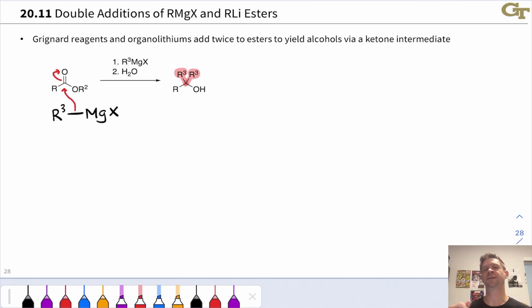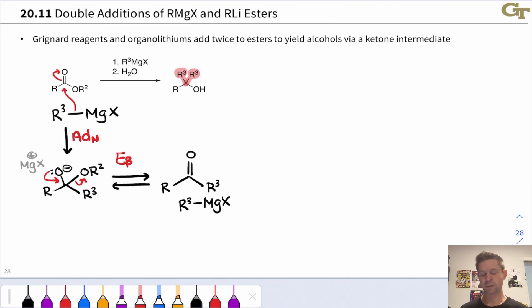In the first step, we have nucleophilic addition of the nucleophilic R3 group to the carbonyl carbon. This generates an alkoxide intermediate, which we see right here, and this can eliminate, at least reversibly, the alkoxide to give a ketone intermediate. But at this point, that ketone is even more reactive toward the Grignard reagent than the starting ester because the ketone is more electrophilic than the starting ester. So a nucleophilic addition process can occur here again to give us an alkoxide intermediate derived from a tertiary alcohol.